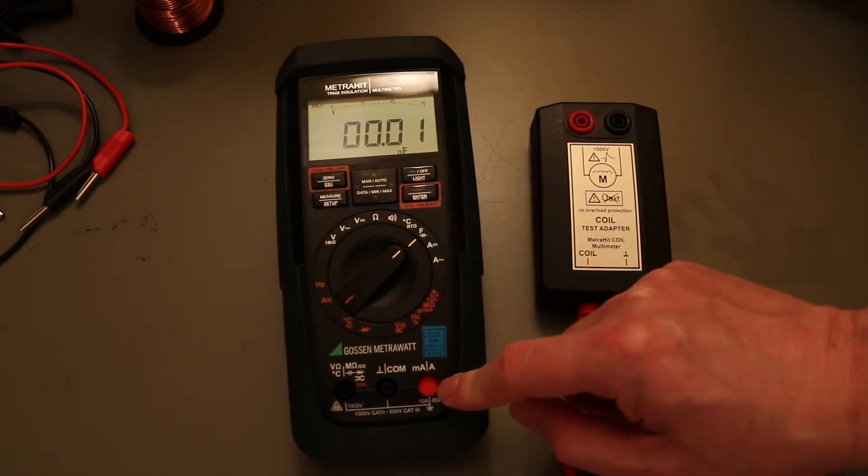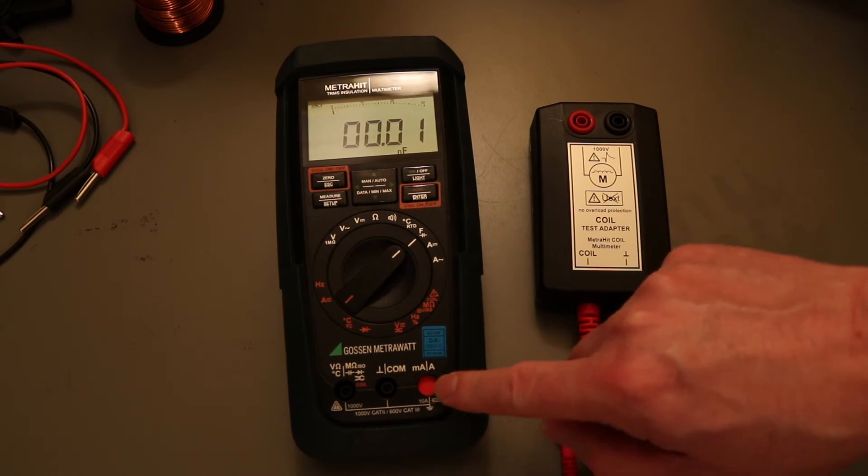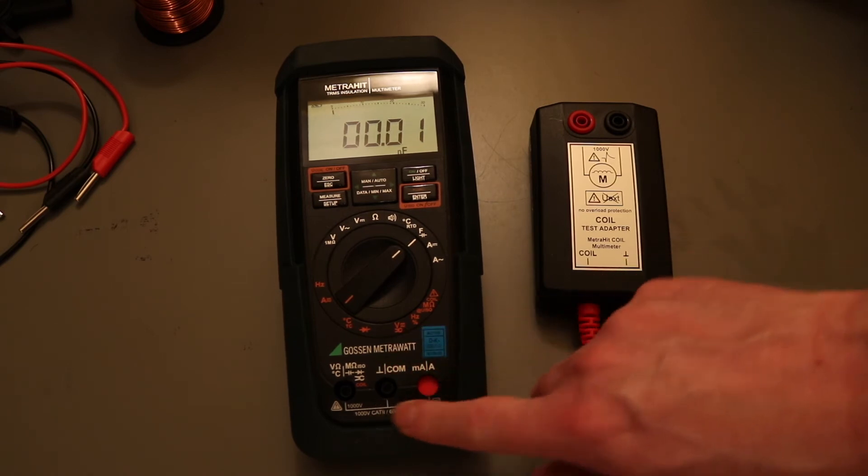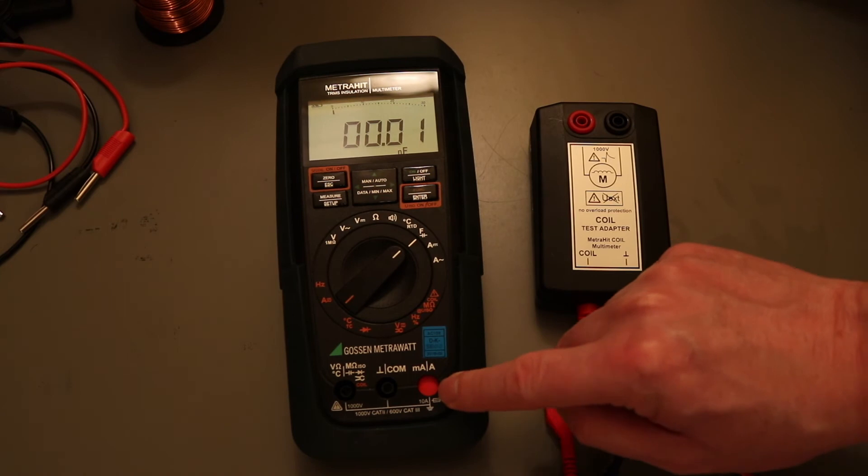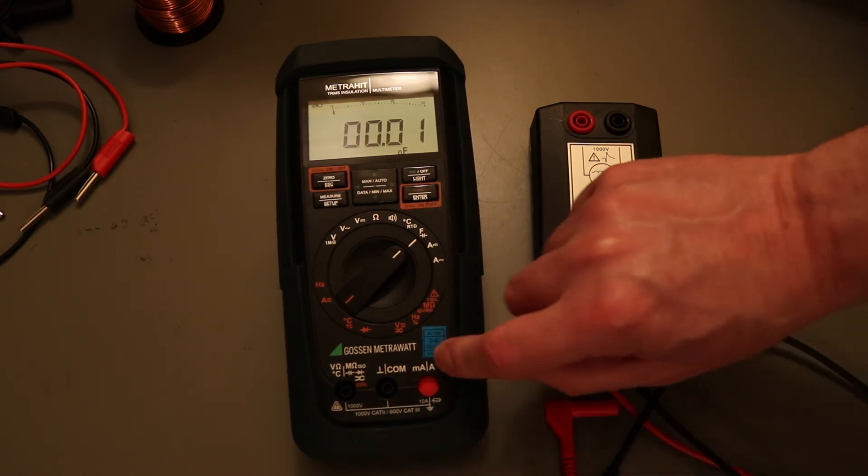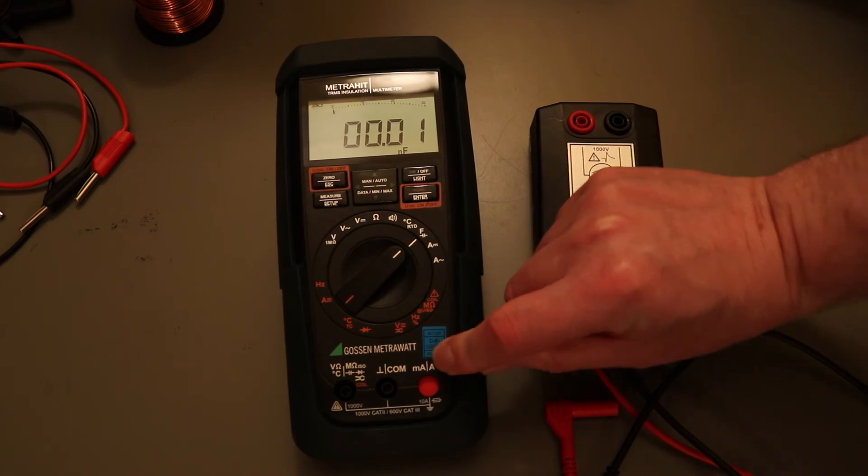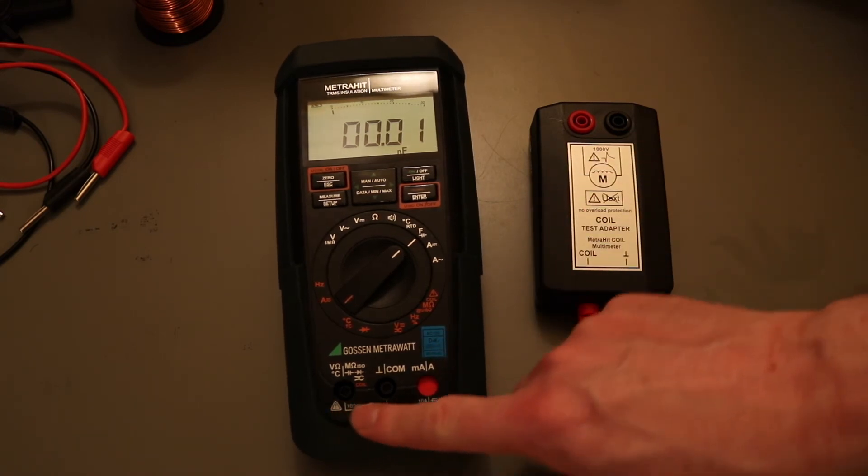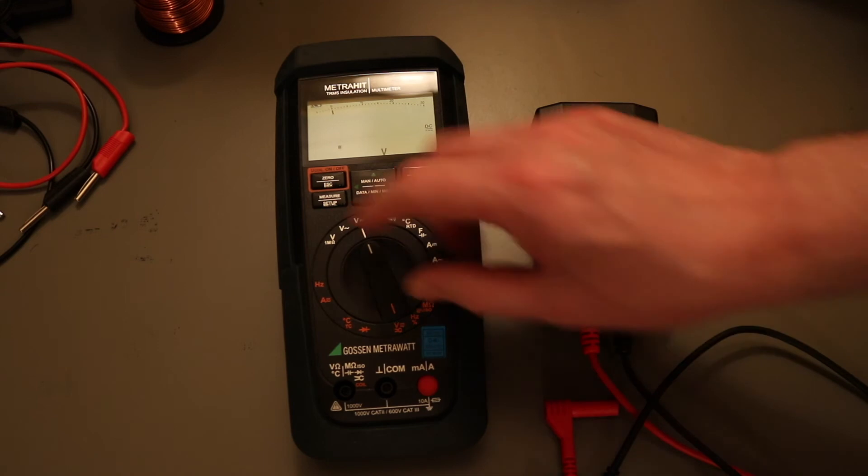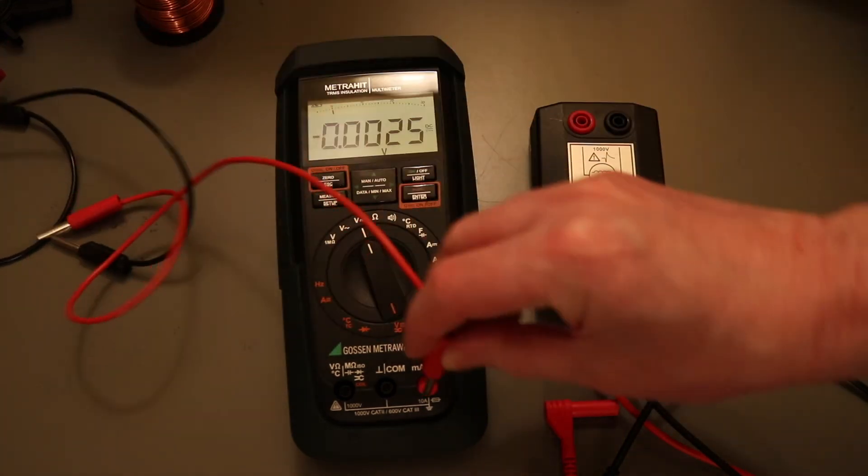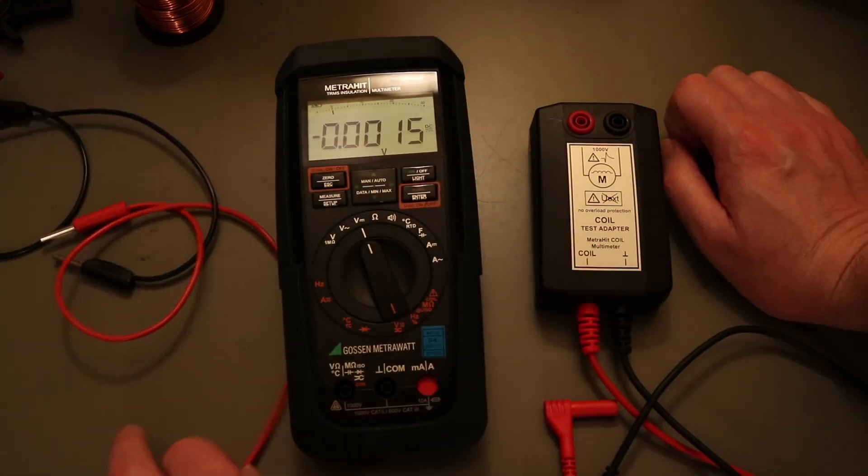Now this MetraHit range does also include Gossam's safety feature. I've only ever really seen this on Gossam's MetroWatt instruments. They actually have a blank on milliamp amp function when you're on any of the voltage ones. You can see it stays there. And I can't actually physically get a probe in to that jack.